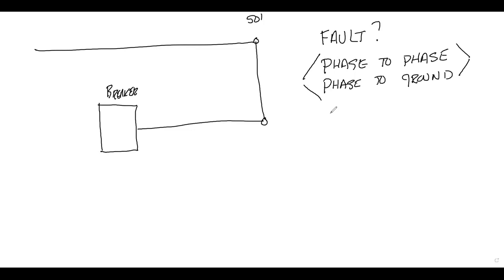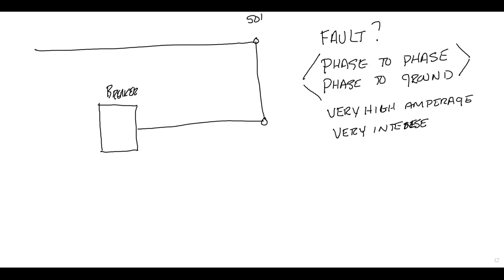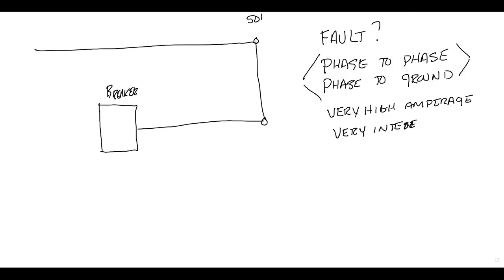So those are the two occurrences we have in faults. Now, what are the characteristics of the fault itself? Very high amperage — very high amperage. And they are very intense. When I say intense, you're going to get a big ball of fire, something explosive. When I say very high amperage, we're out of the normal operating system ranges — we're talking thousands to tens of thousands of amps. Very, very intense.